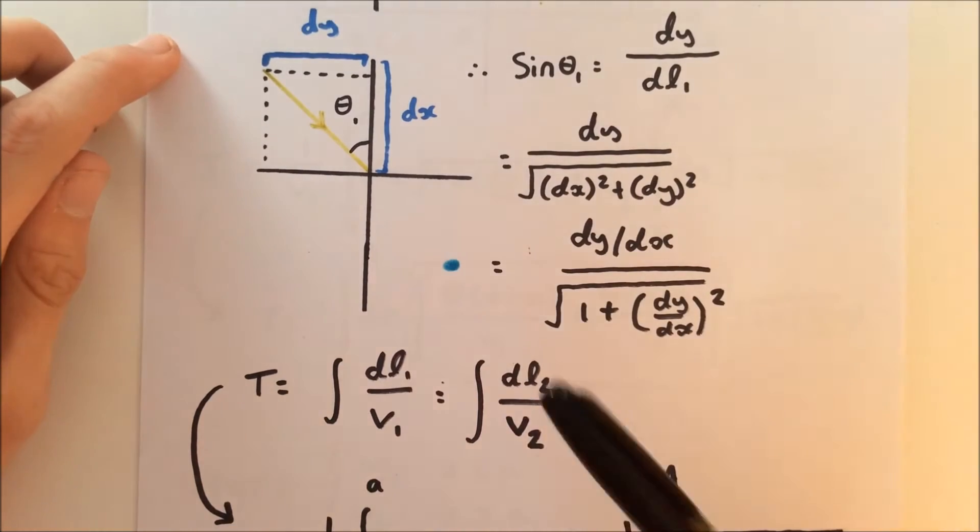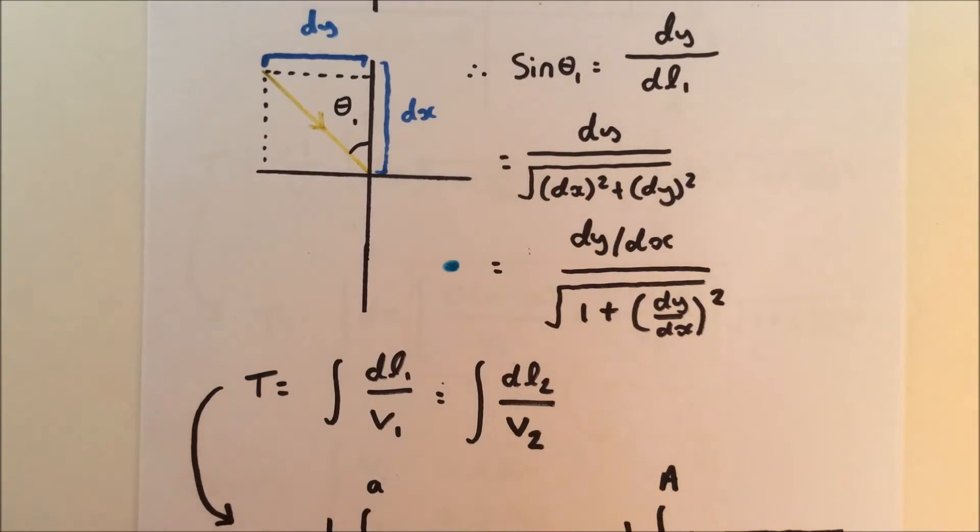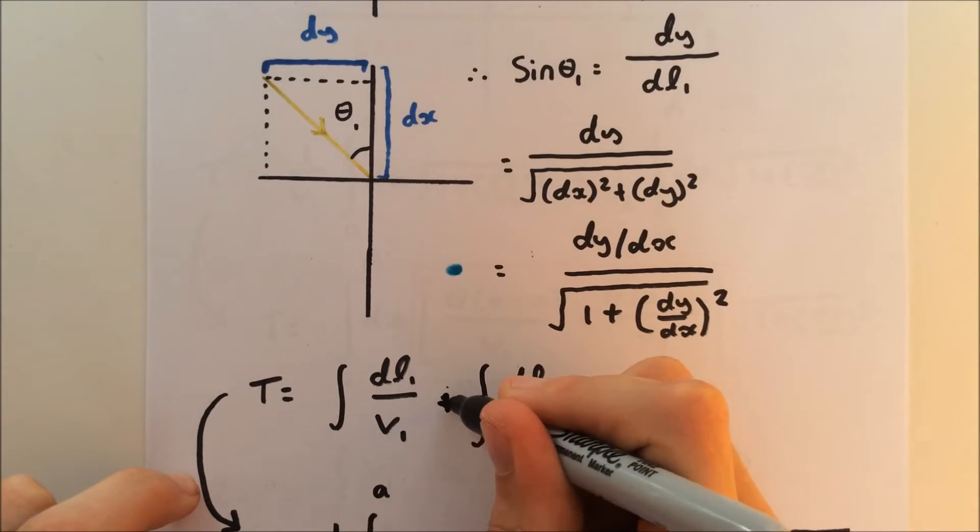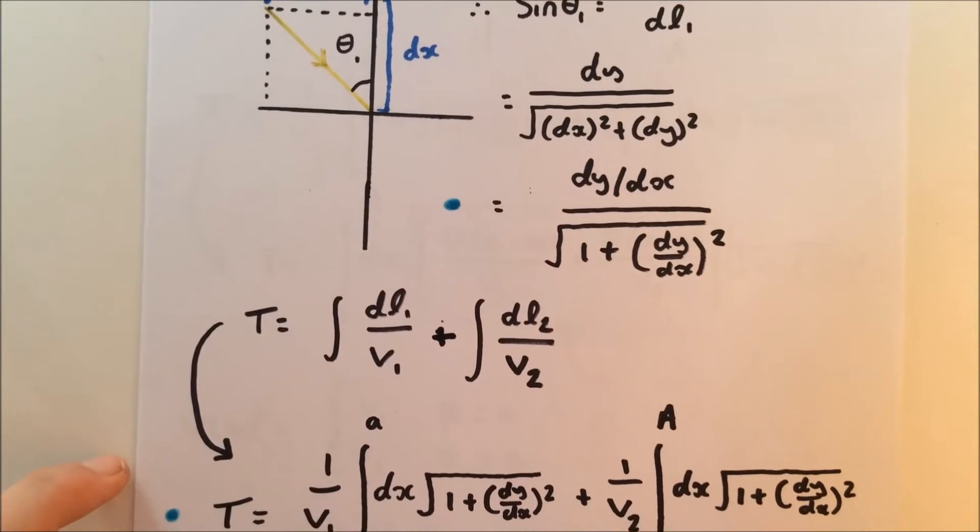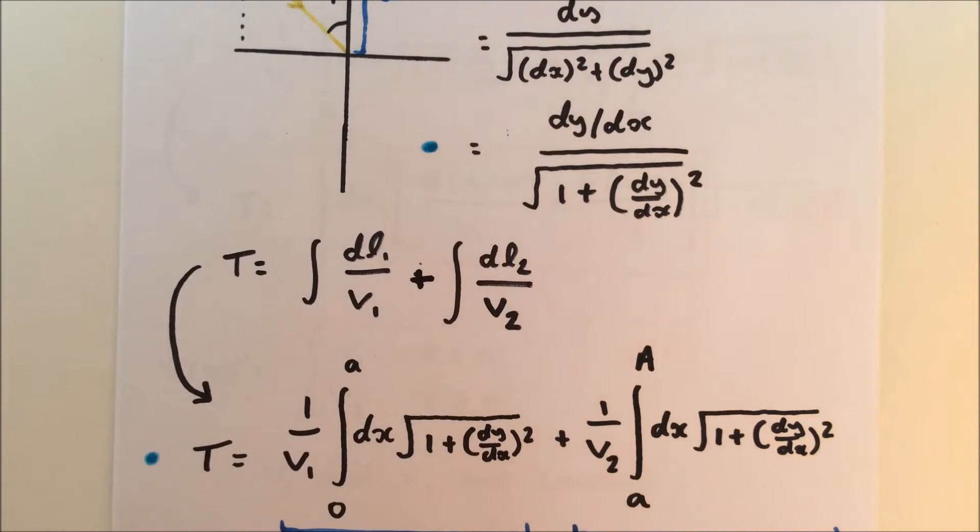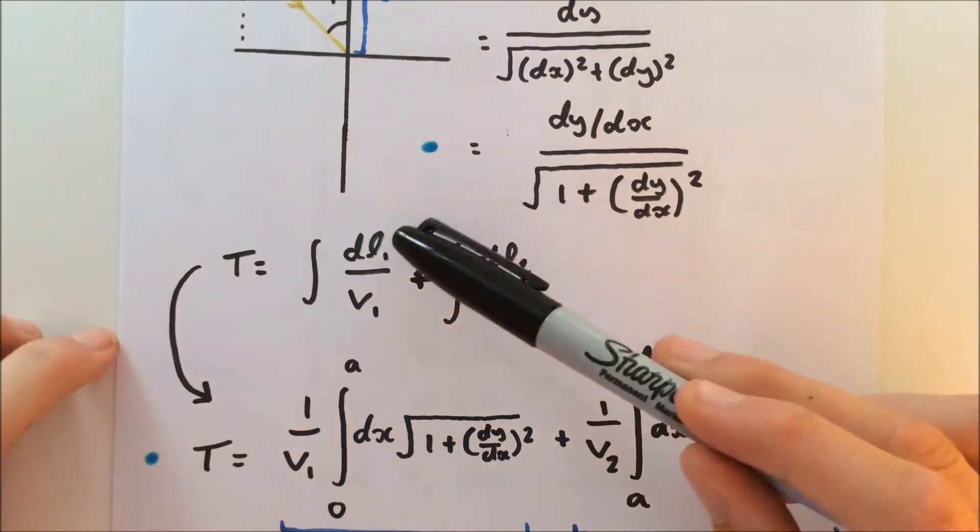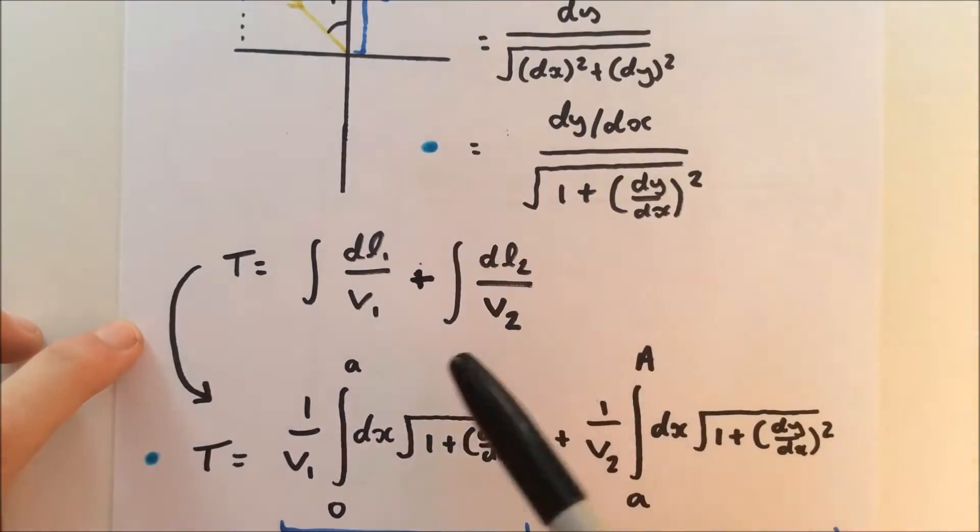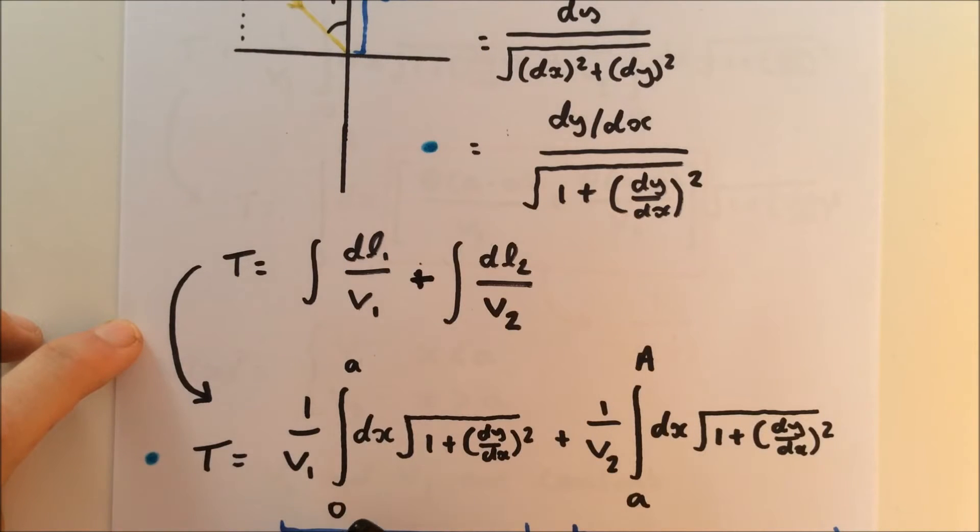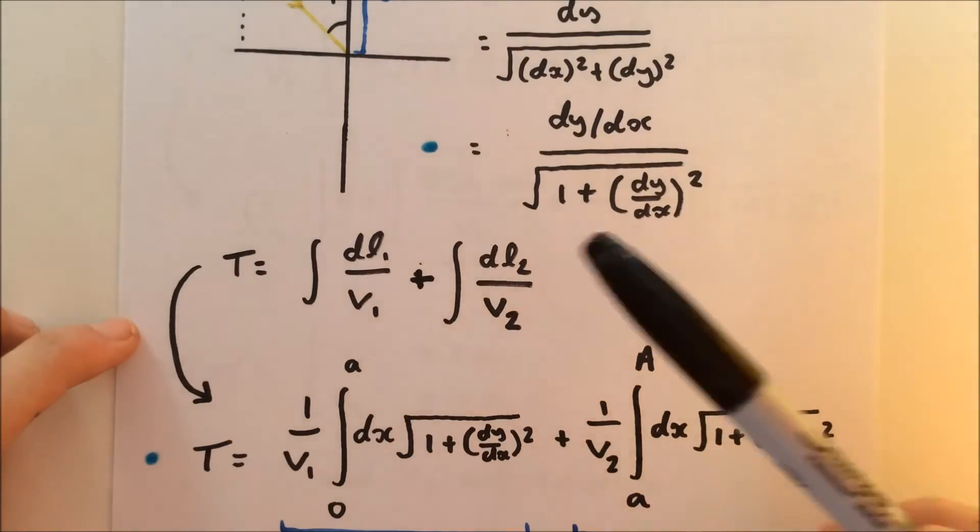So before we said that T was equal to this integral plus that integral, the total time. So now we can substitute DL1 for the root. Therefore we get 1 over V1 times the integral from O to A, from O to the boundary of the surface, dx times that root, plus 1 over the velocity in medium 2 multiplied by the integral from A—that's the boundary to the end point capital A—multiplied by the same thing. That is the total time, just substitute what we had for DL1.